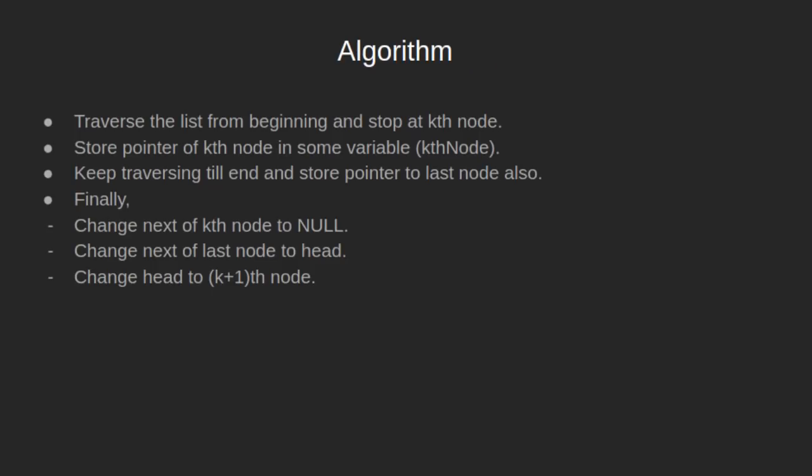Now let's see the algorithm to solve the given problem. Start traversing the list from the beginning and stop at the kth node. Store the pointer of the kth node in a variable, let's say kth_node. Keep traversing the remaining list till the end and store the pointer to the last node also. Finally, to rotate the linked list, perform the following 3 steps: change next of kth node to null, change next of last node to head, and change head to the (k+1)th node.